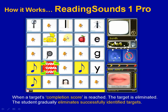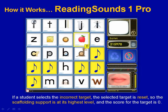When a target score is achieved, that particular target is eliminated from the game. If the student makes an error — in this case the program presented E and the student pressed A for Apple — then the scaffolding support for that particular target is reset to its maximum level.